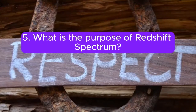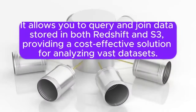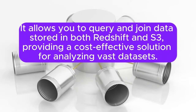Question 5: What is the purpose of Redshift Spectrum? Answer: Redshift Spectrum extends the functionality of Amazon Redshift to analyze data directly from Amazon S3. It allows you to query and join data stored in both Redshift and S3, providing a cost-effective solution for analyzing vast datasets.